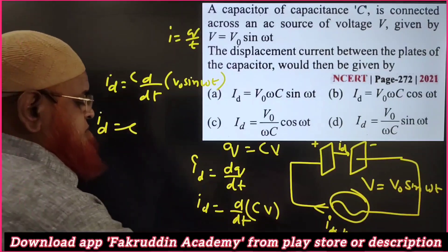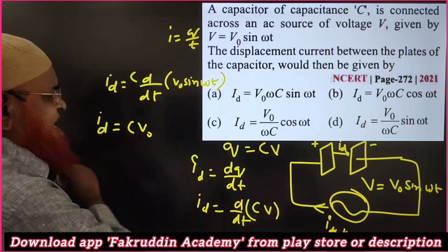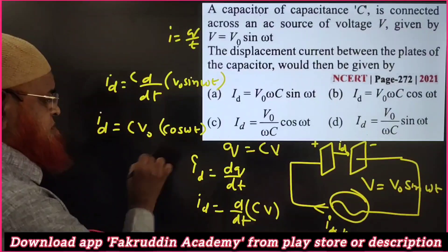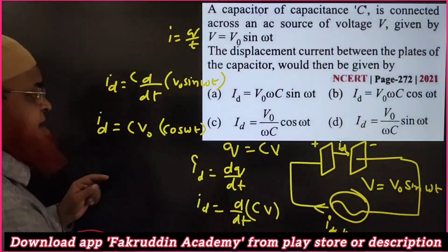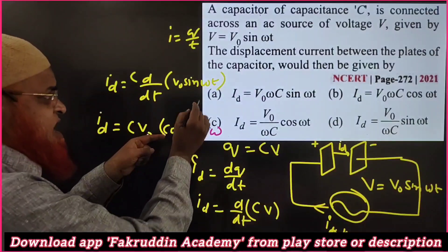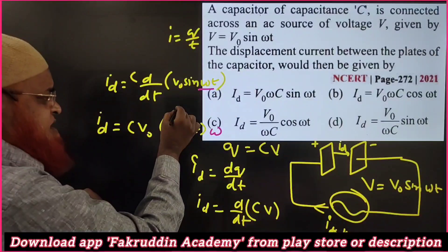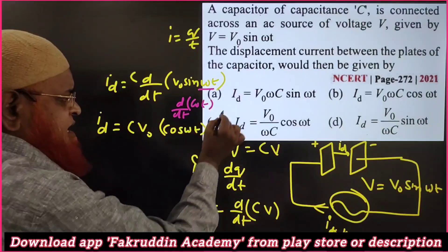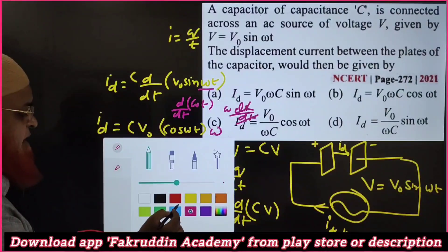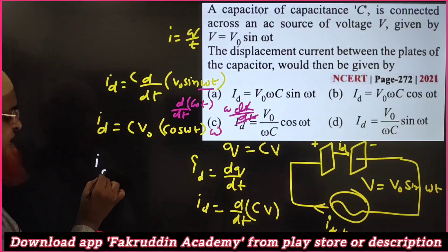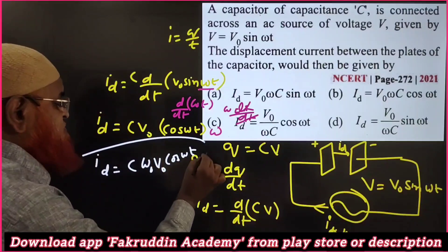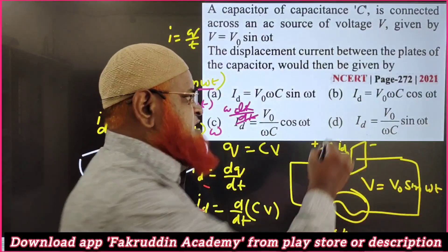With C constant, differentiating V₀ sin(ωt) gives V₀ cos(ωt), and differentiating ωt with respect to time gives ω. So ω × dt/dt = 1, and ω remains. Finally, drift current = C ω V₀ cos(ωt). This is the final answer, which corresponds to option B.